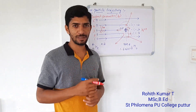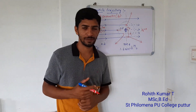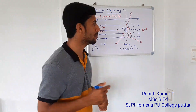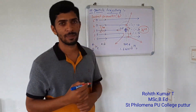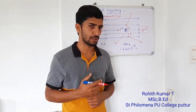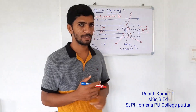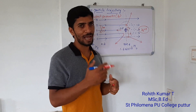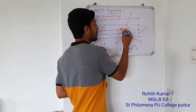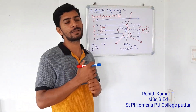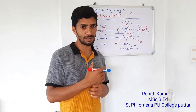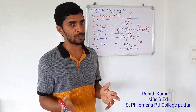Now I will ask two questions to check your understanding. First: what is the scattering angle when the impact parameter B is 0? Second: explain the variation of scattering angle with respect to impact parameter. Answer to the first question: when B is 0, the scattering angle is 180 degrees — the alpha particle scatters straight backward. Answer to the second question: when impact parameter increases, the angle of scattering decreases; when impact parameter decreases, the angle of scattering increases.